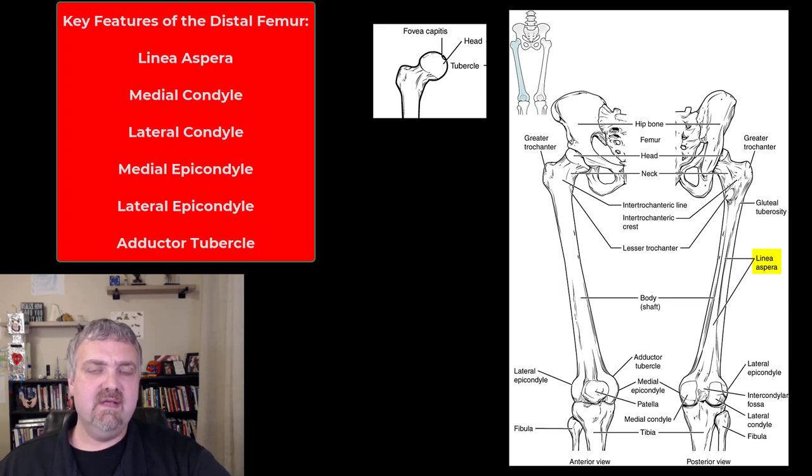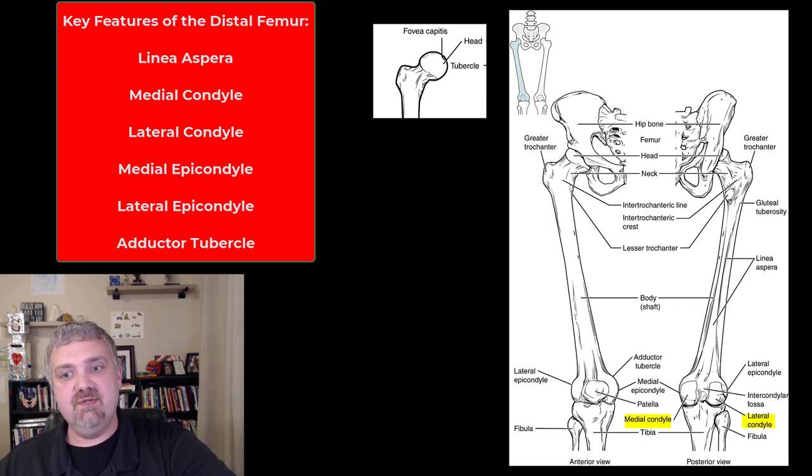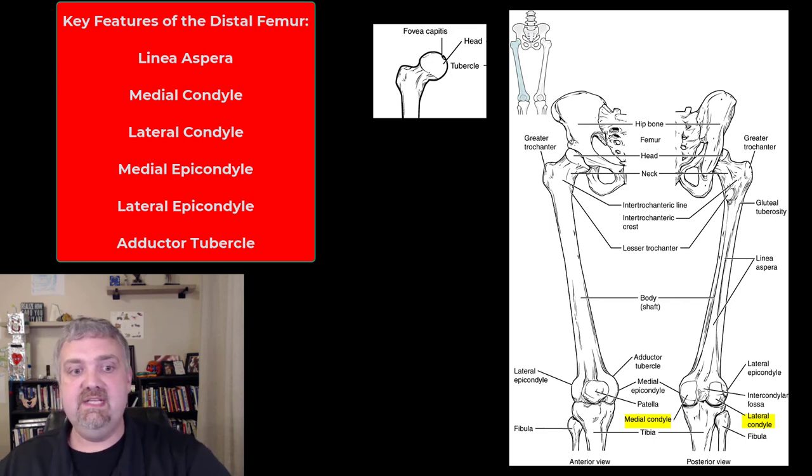The linea aspera, that's going to be a very important attachment point for a lot of the muscles in the area. Then at the bottom of the femur, you see the medial and lateral condyle. That's the portion of the femur that actually connects to the medial and lateral condyle of the tibia. So that's going to be where your knee joint is.